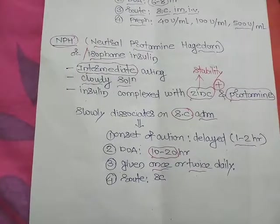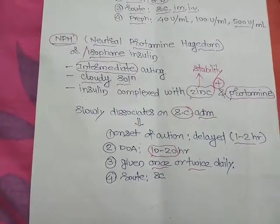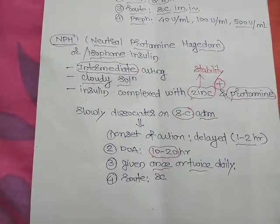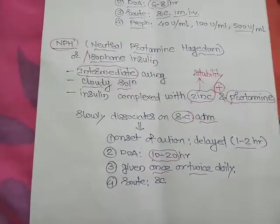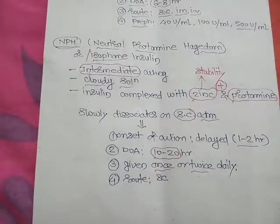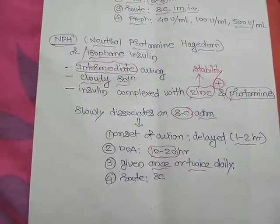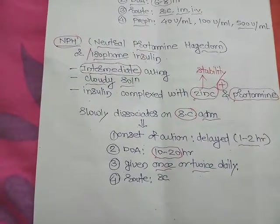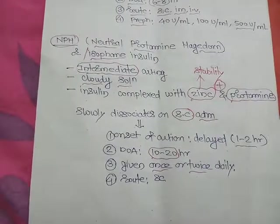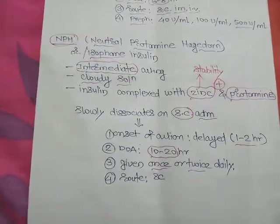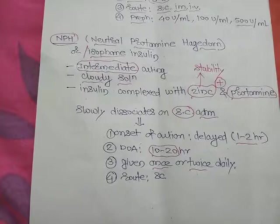Isophane insulin is an intermediate-acting preparation with a duration of action of 10 to 20 hours. It is a cloudy solution where insulin is complexed with both zinc and protamine, making it more stable than regular insulin. It slowly dissociates on subcutaneous administration, also forming hexamers, with an onset of action of 1 to 2 hours. It should be given once or twice daily, and the most preferred route is subcutaneous.